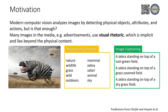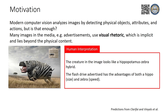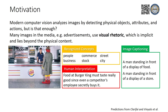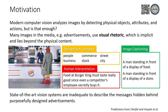Similarly, a vision system recognizes the zebra in this hybrid but misses the hippo, which is required to infer that the product is both fast like a zebra and large like a hippo. This last example visually references cultural background. As we can see, existing computer vision systems are insufficient to capture the rhetoric and decode the meaning of ads.